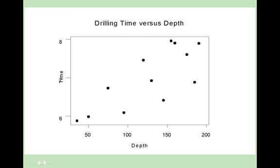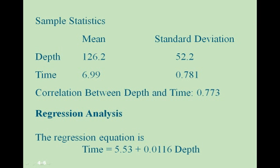We have some sample statistics. The mean depth was 126.2, with a standard deviation of 52.2. The mean time was 6.99, with a standard deviation of 0.781. We found that r, our correlation between depth and time, was 0.773. Our regression equation is: time, or y, equals 5.53 plus 0.116 times depth, or x.